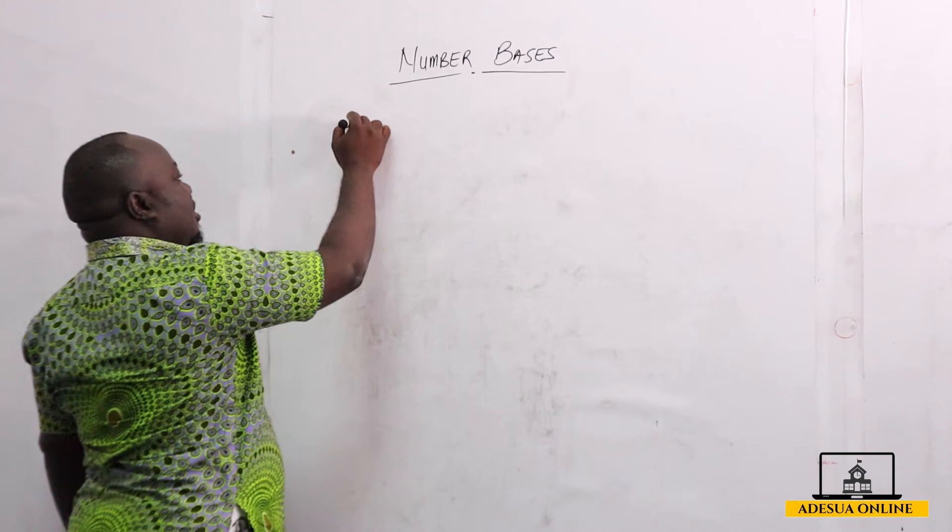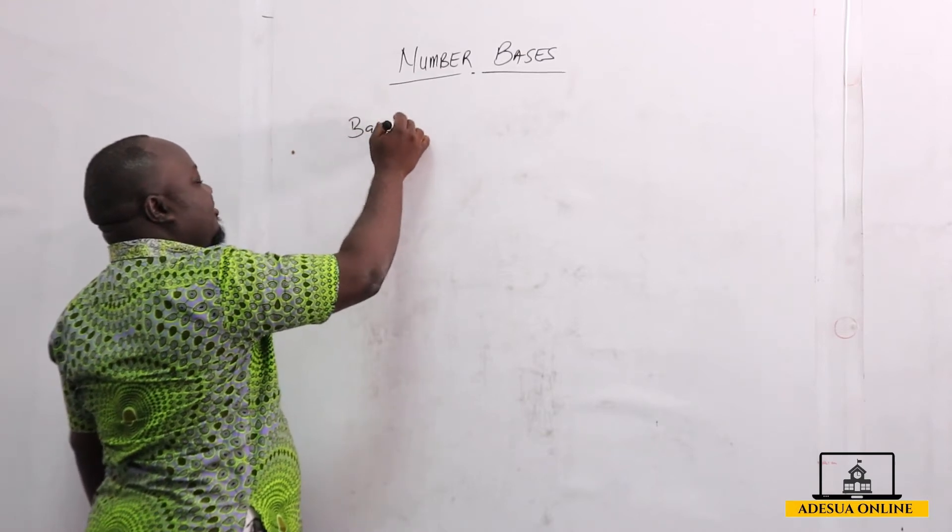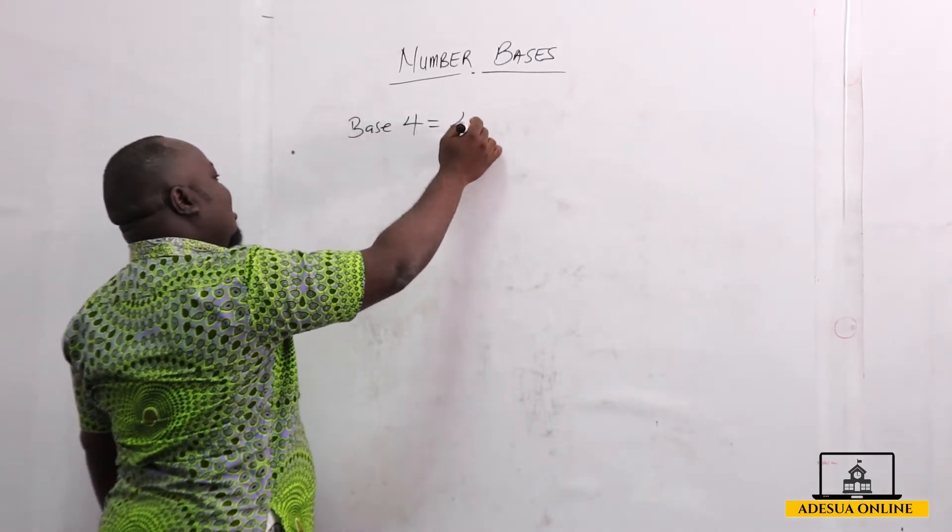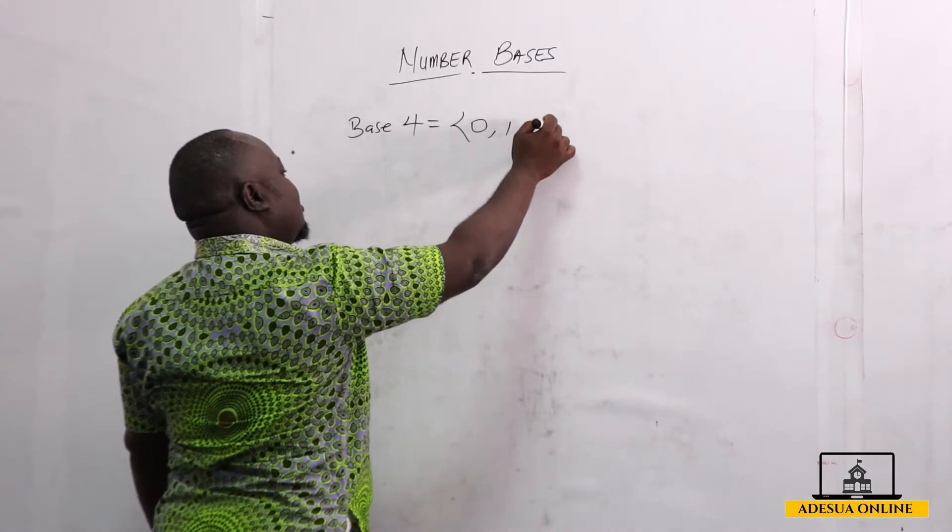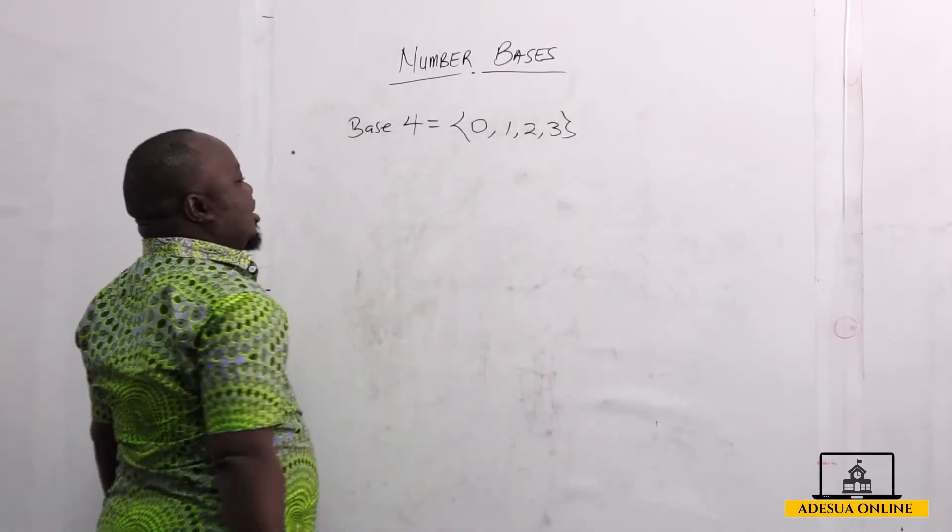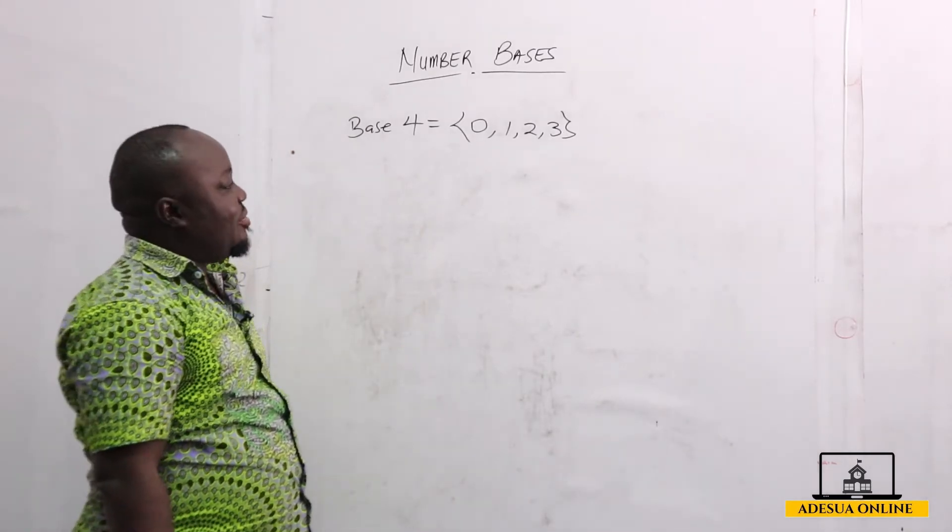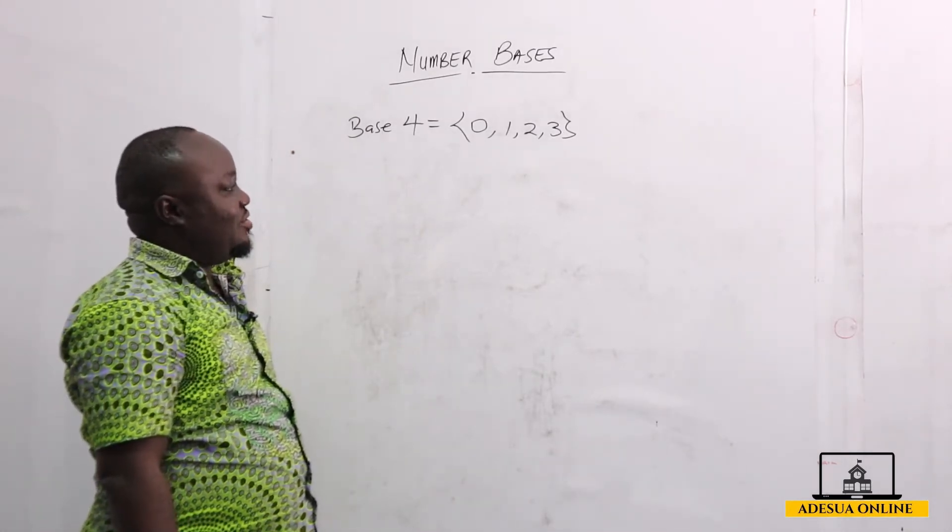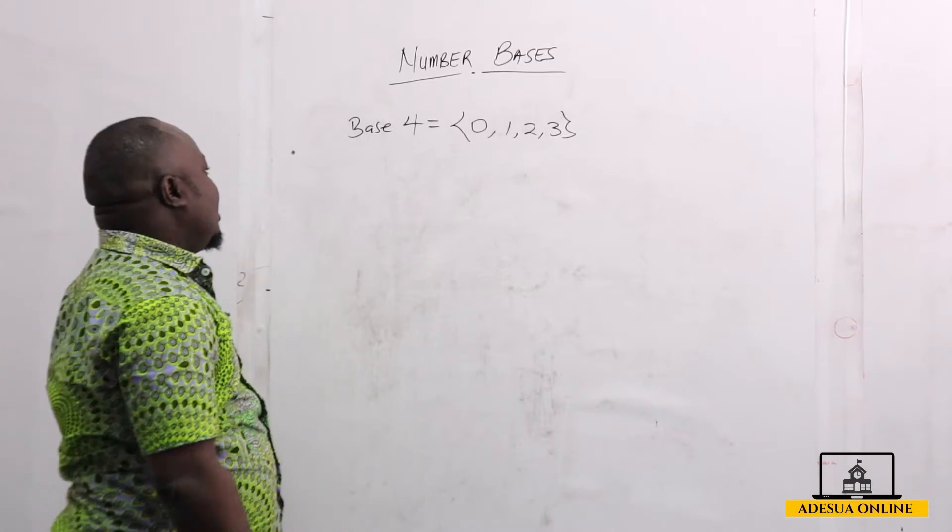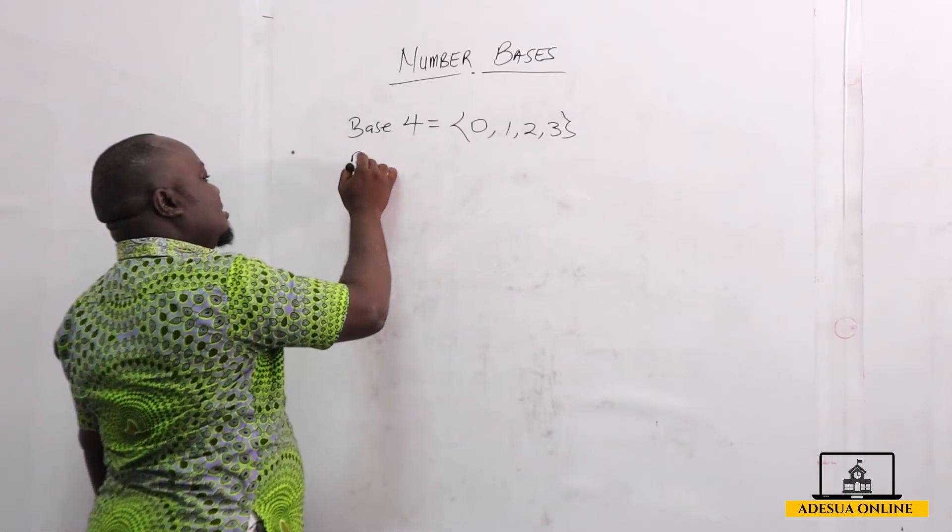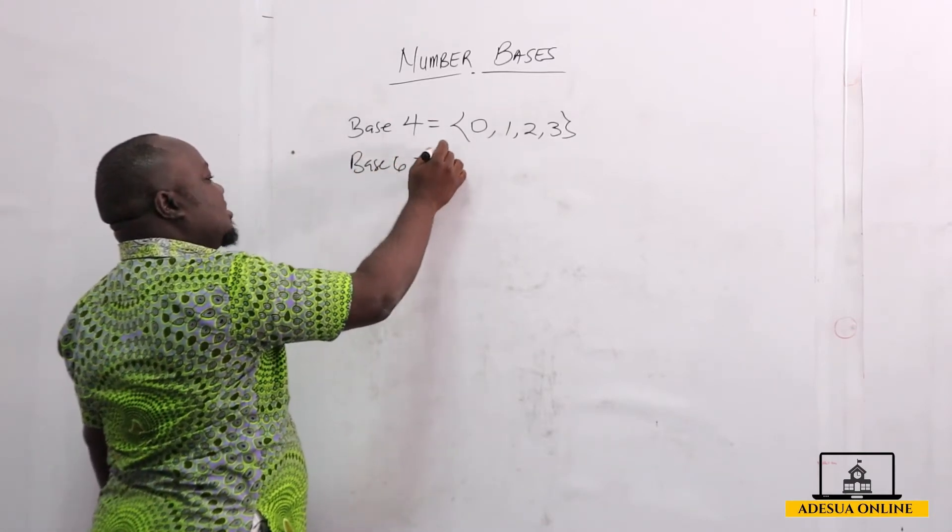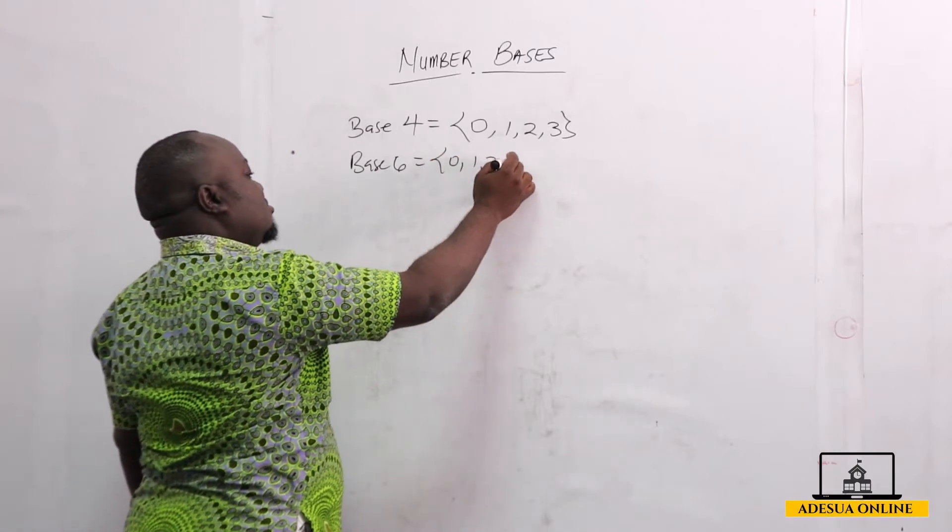When we talk about base four numbers or base four numerals, we can talk about zero, one, two, three. The remainder when we divide anything by four - these are the remainders. We can either have a remainder of zero, one, two, or three. When we talk about base six, we can also have zero, one, two, three, four, and then five.